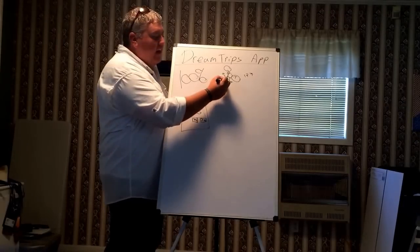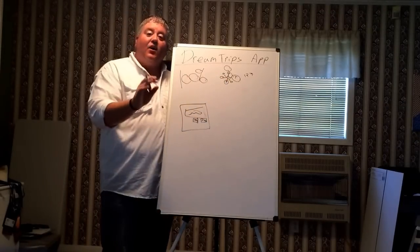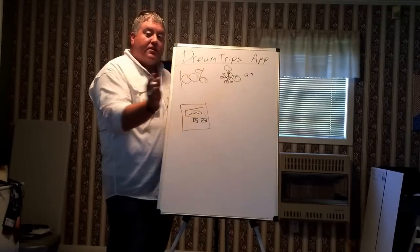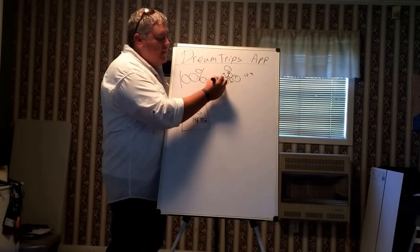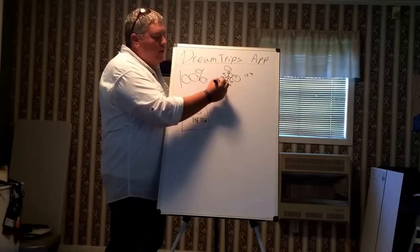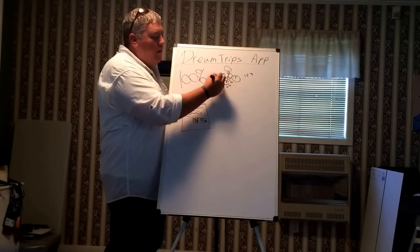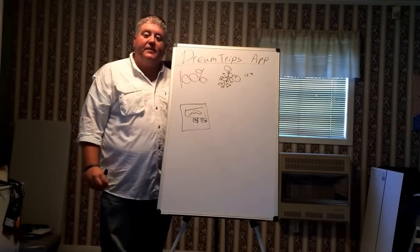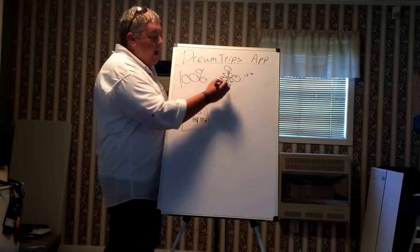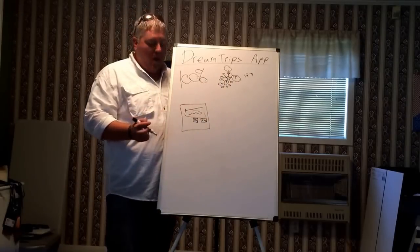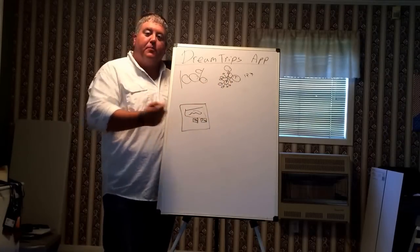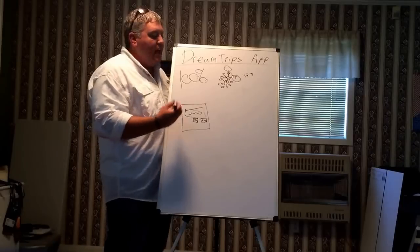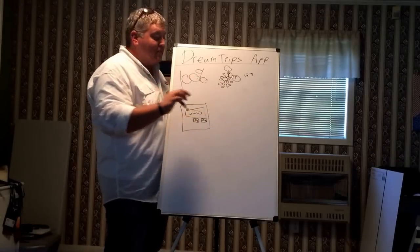This guy is Scott. Now Scott goes out and he shares it because he wants to do the same thing. He goes out and does his five as well, right? So one, two, three, four, five. He goes out and does the same exact thing. Now he's earned his dream trip points. He gets to go and take the non-member price, but put award points towards it and take his trip.